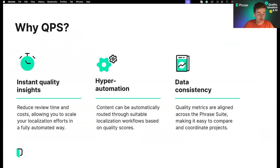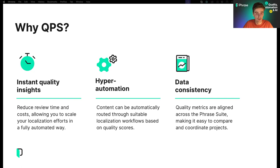Now for a quick summary. Why is QPS great for your workflows? The most important thing is that it provides instant quality insights, reducing the time necessary to review your translations, which reduces your overall costs and allows you to spend your time and resources more efficiently. The second important thing is that it enables automation — it's now possible to automatically confirm certain segments that meet your required quality thresholds. QPS also introduces data consistency across the Phrase suite: we now have one standardized way of assessing translation quality available in Phrase Strings, Phrase TMS, and Phrase Language AI via API.